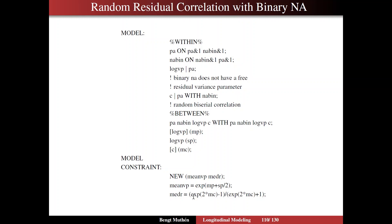So you can do random correlations also when one or both of the variables are binary.